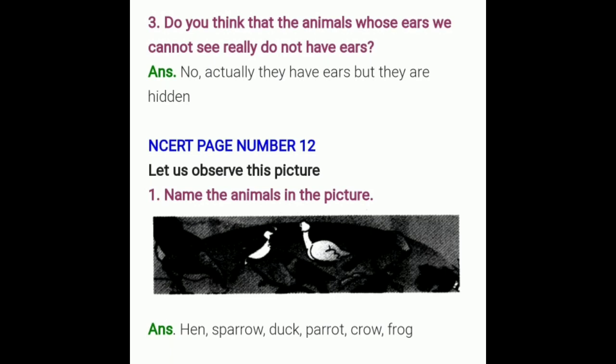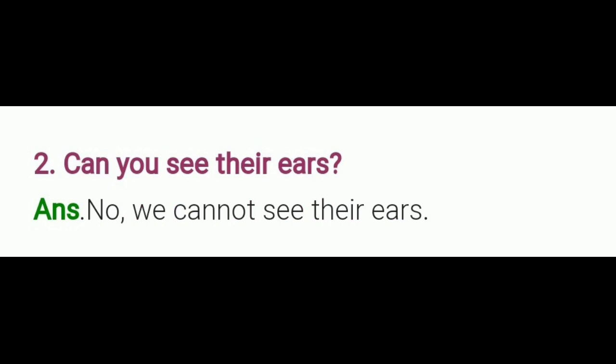Let us observe this picture. Name the animals in the picture: hen, sparrow, duck, parrot, crow, frog. Next question: can you see their ears? Answer is no — we cannot see their ears because they are hidden. This does not mean that their ears are not there.